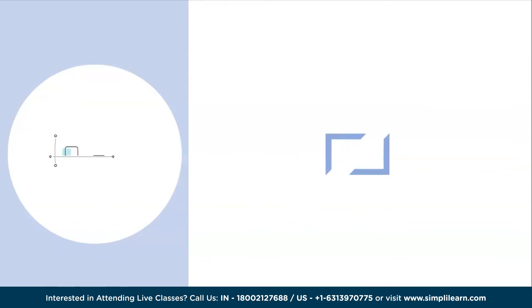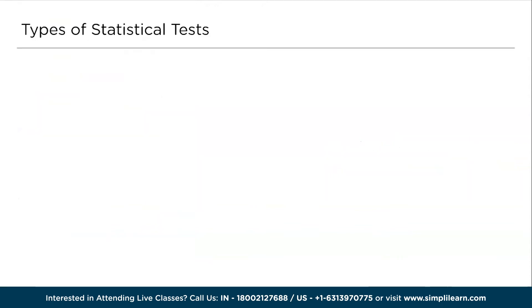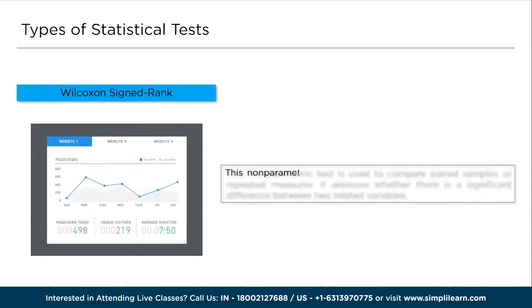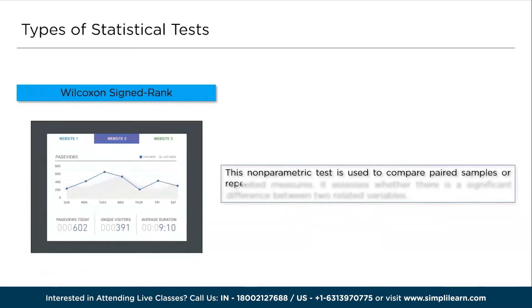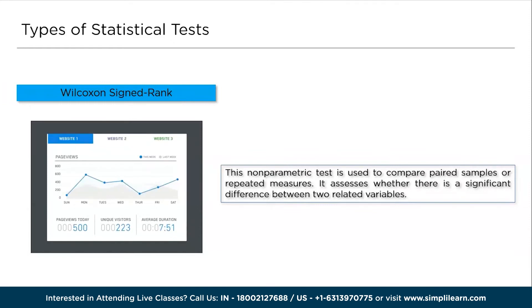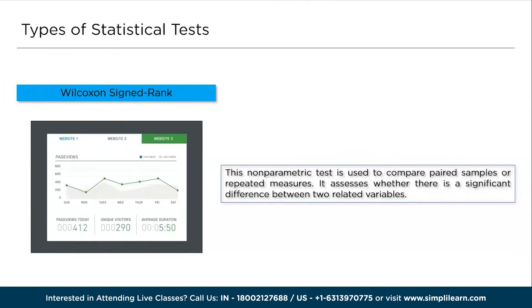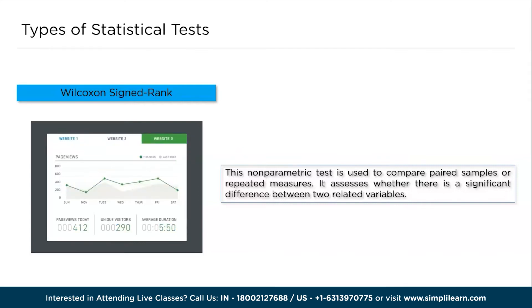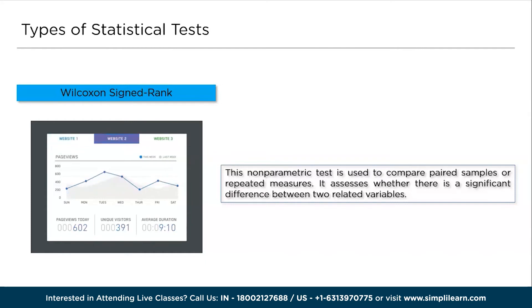Now the next one: the Wilcoxon signed-rank test. This non-parametric test is used to compare paired samples and repeated measures. It assesses whether there is a significant difference between two related variables. The Wilcoxon signed-rank test is employed when the data do not meet the assumptions required for a parametric test, such as the paired t-test.